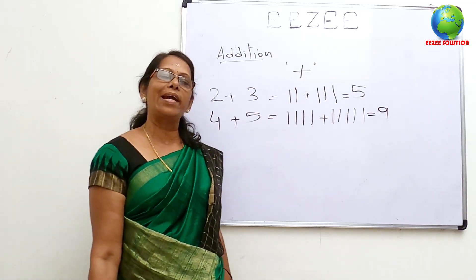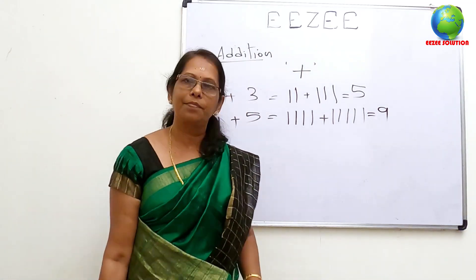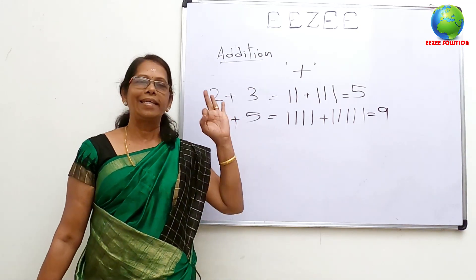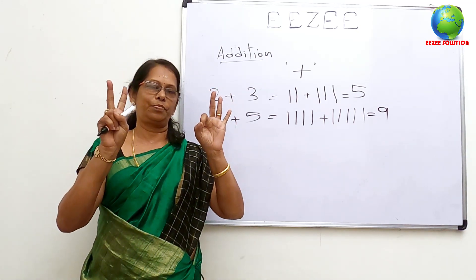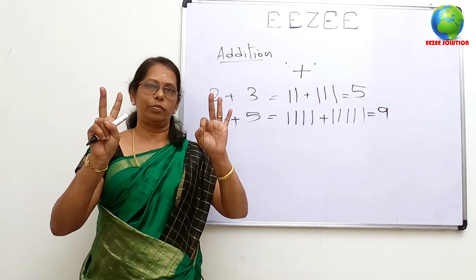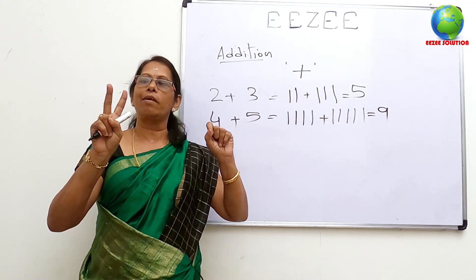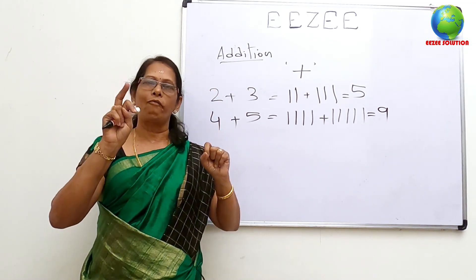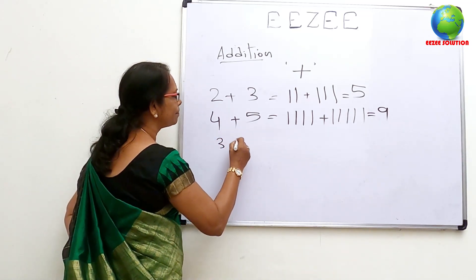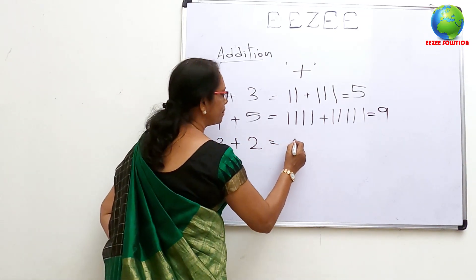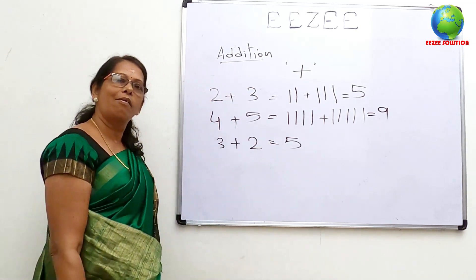We have to count on the fingers. Now, 3 plus 2. 3 plus 2. That is 5.